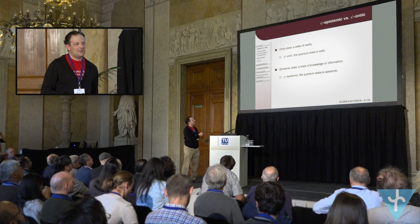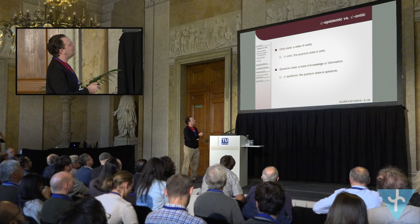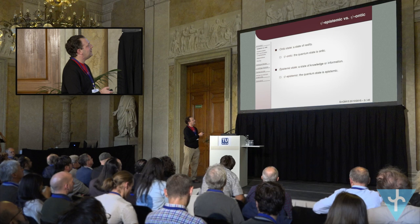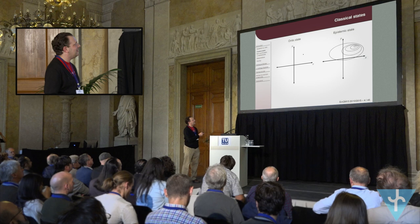The sci-ontic view is the view that the quantum state is such a thing — there really are quantum states out there in some sense. On the other hand, an epistemic state is a state of knowledge or information, and the cyber-systemic view is that the quantum state is such a thing. Let's look at the example of classical physics, where the distinction is very clear.